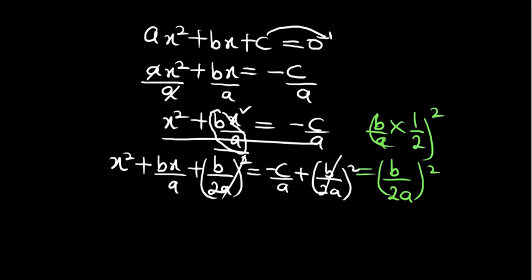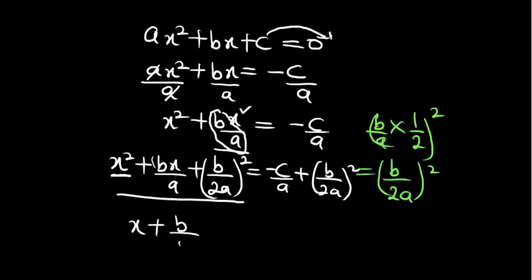Now for us to factorize the left-hand side: if you notice, we have x here and b over 2a, so we are going to factorize this as (x plus b over 2a) all squared. If you expand the brackets you will come back to the same expression, so this factorization is correct.